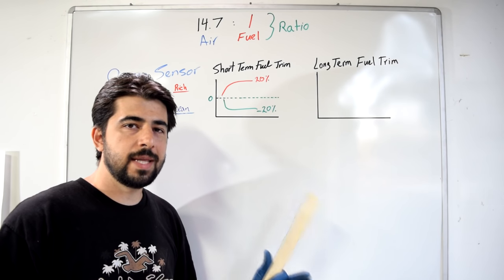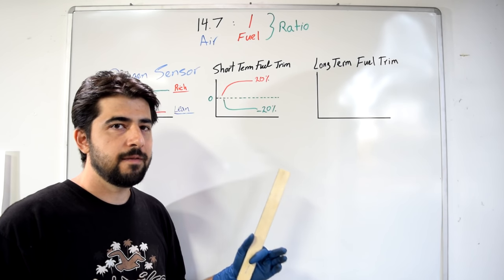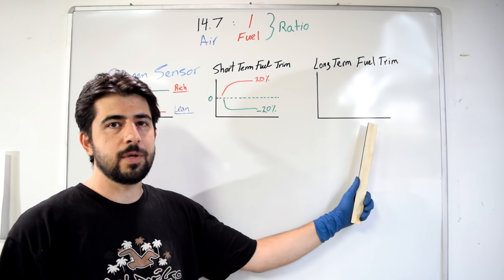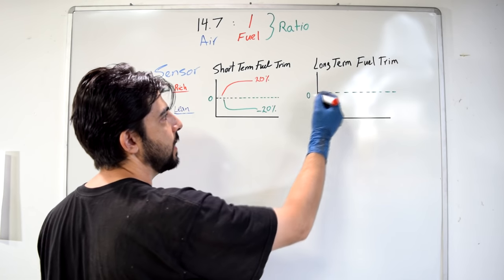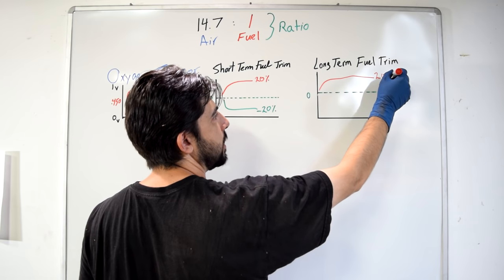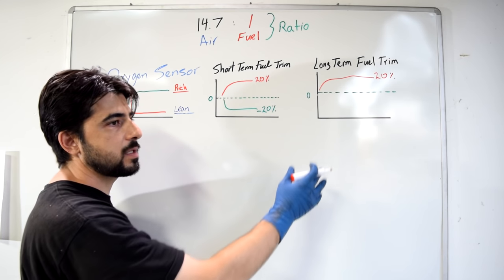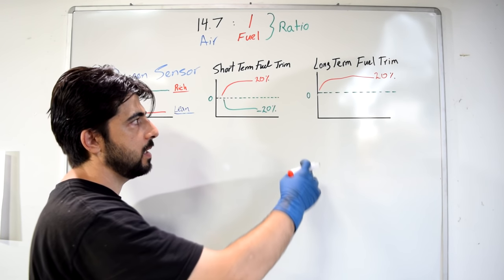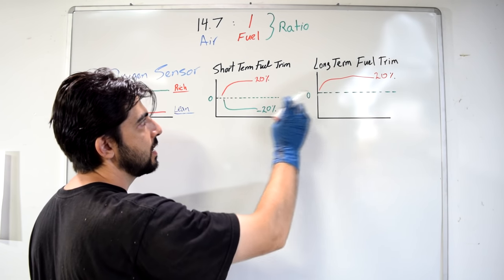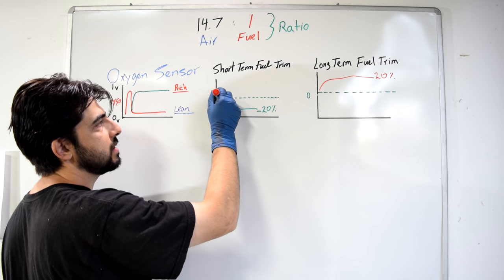Now if the problem causing your rich or lean condition is continuous and affecting your engine's air-fuel mixture for a long time, the information from your short-term fuel trim will transfer over to your long-term fuel trim. For example, if you're running lean at positive 20 percent, the long-term fuel trim will slowly increase toward that 20 percent while the short-term fuel trim decreases back down to near zero. This happens gradually — your car's computer has to run lean for a while before the long-term trim starts adjusting.